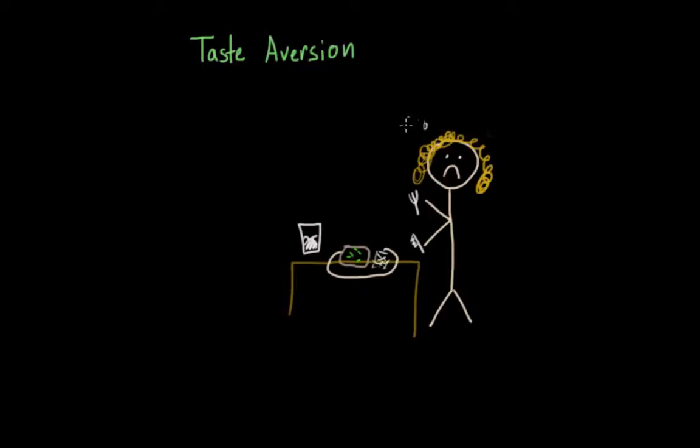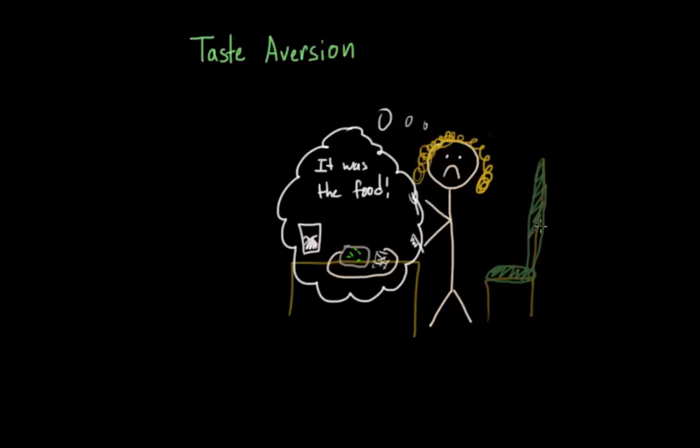But more importantly, I want to note that my body connected the fact that I got sick with something that I ate. I didn't get an aversion to eating in restaurants with green leather seats or wearing jeans or eating at 7:30 p.m. My body seems to have naturally understood that nausea most likely resulted from the food that I consumed and not any of the other factors that were going on around me at the same time.